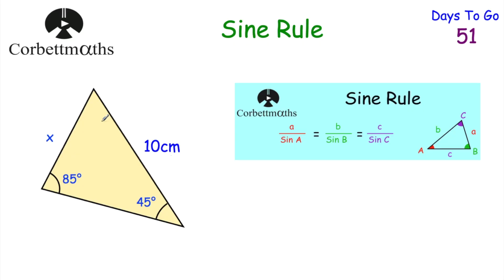Today we're going to be looking at the sine rule. We've looked at basic trigonometry — SOH CAH TOA. Now we're going to look at the sine rule. The sine rule is: a over sin A equals b over sin B equals c over sin C. Little a is the side and capital A is the angle opposite it; little b is the side and capital B is the angle opposite it; little c is the side and capital C is the angle opposite it. As you can see from the diagram, here you've got little a and capital A, little c and capital C, little b and capital B, and so on.